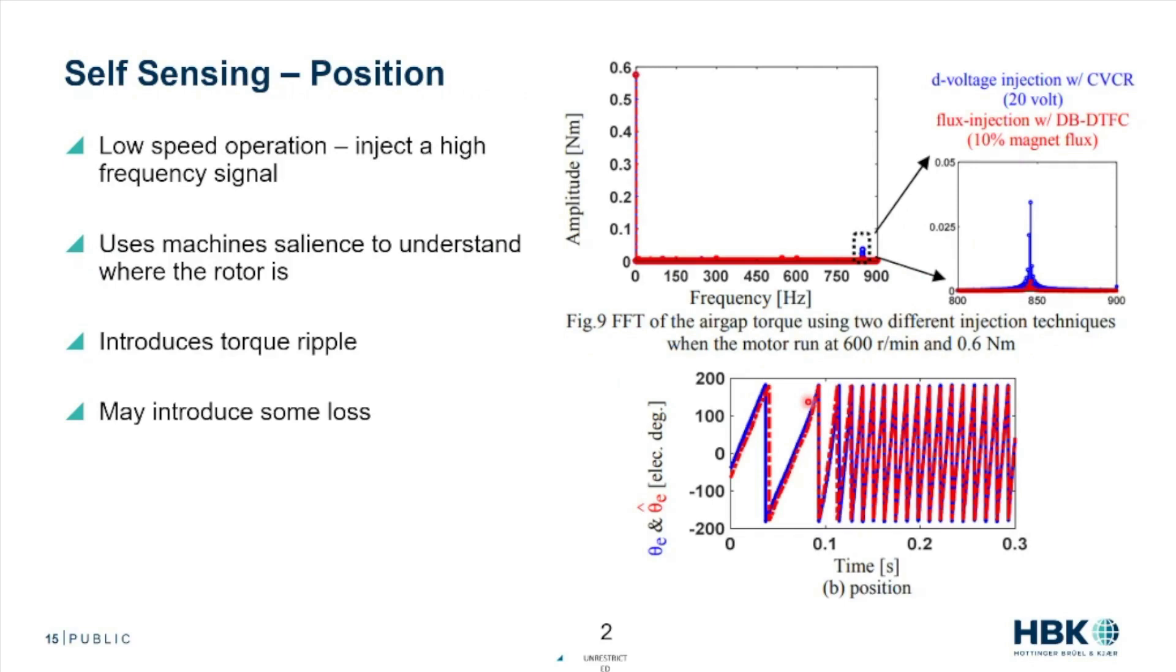You can also use clever things with harmonics for predicting where the rotor is, so you can do self-sensing with harmonics. You can inject a high frequency signal.